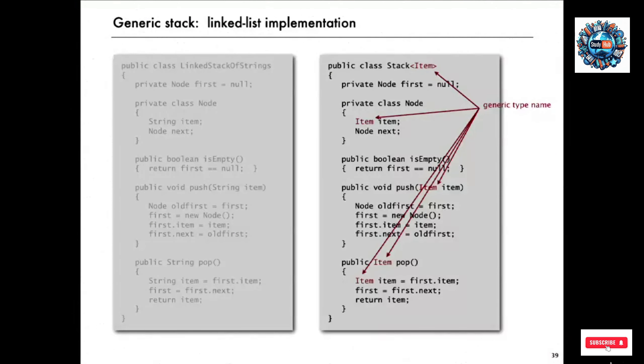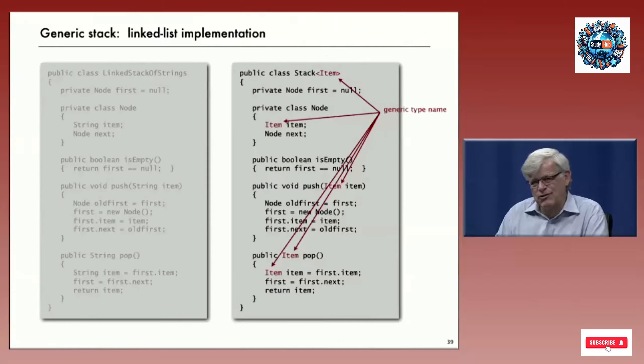Actually, with a good generic implementation, it's not difficult to simply take every place that we use string and replace it with a generic type name, as in this code here. On the left is our implementation of a stack of strings using linked lists. On the right is a generic implementation. Every place that we use a string type on the left, we use the word item on the right.